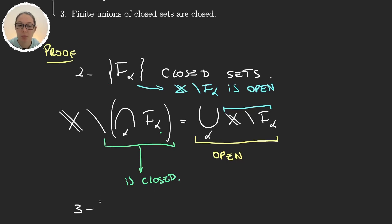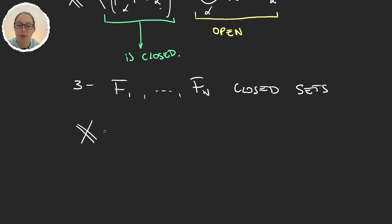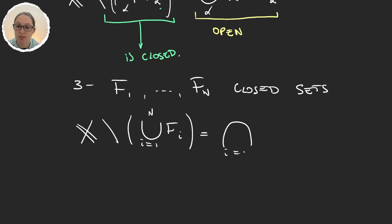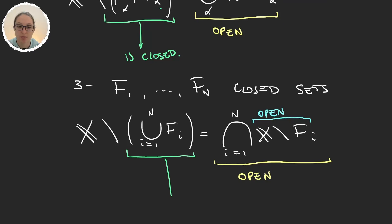Very similarly, we'll prove the third one. Finite unions of closed sets are closed. So let's take a finite collection of closed sets. To prove that the union is closed, just take x minus the union and we have to prove that this is an open set. But now again using De Morgan's law, this is the intersection of x minus f_i. And these are all open sets, so using the definition of a topology, finite intersections of open sets are open. And thus we have that the union is closed.